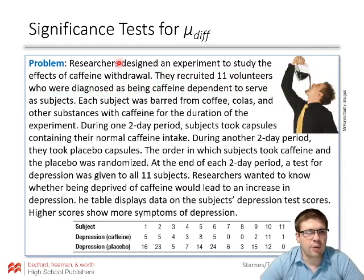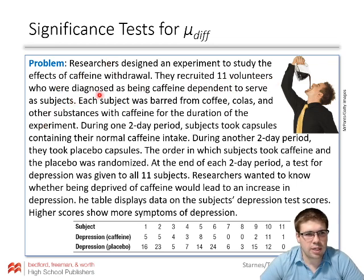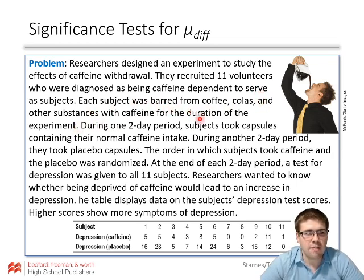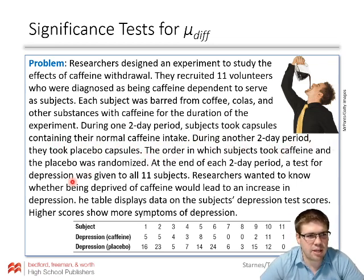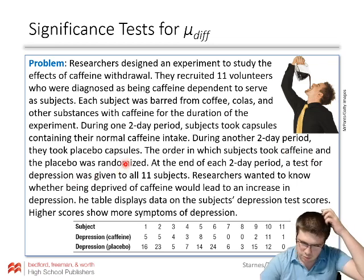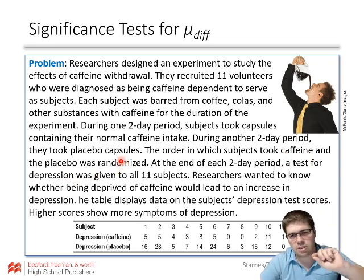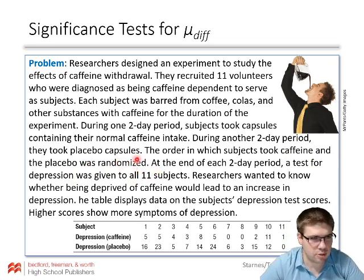Researchers designed an experiment to study the effects of caffeine withdrawal. They recruited 11 volunteers diagnosed as caffeine dependent. Each subject was barred from coffee, colas, and other caffeinated substances for the duration of the experiment. During one two-day period, subjects took capsules containing their normal caffeine intake; during another two-day period, they took placebo capsules. The order in which subjects took caffeine and placebo was randomized, so individuals are getting both treatments and we're going to look at the differences between them.